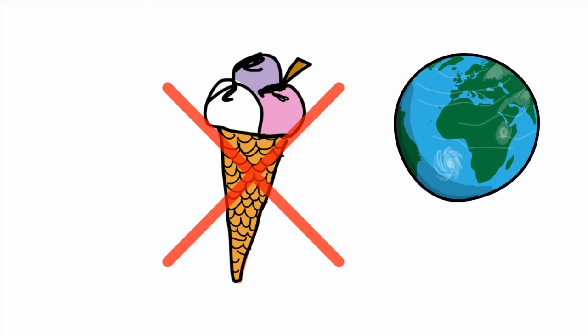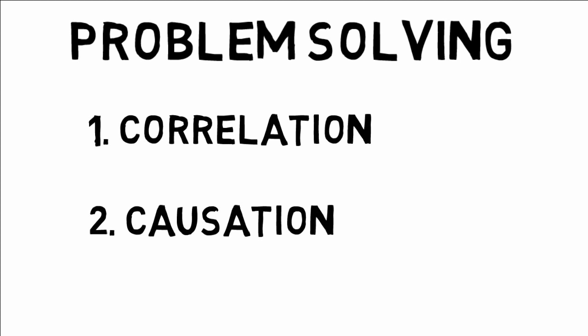While banning ice cream trucks from entering your neighborhood may sound far-fetched, when it comes to problem solving, a common issue is misunderstanding the difference between correlation and causation. This misunderstanding can influence our decisions, sometimes with serious consequences that ripple throughout a community.